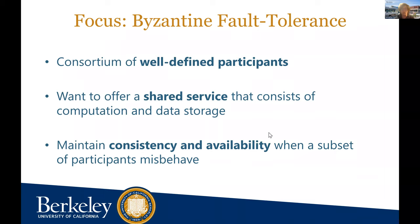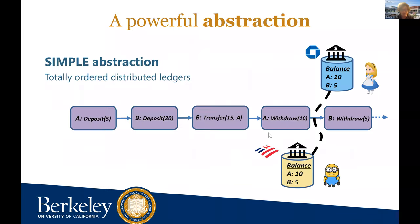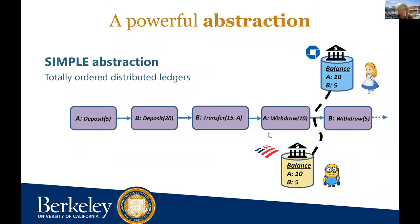We're looking at scenarios with a well-defined set of participants — from five to a few hundreds — who each want to offer a shared service where you can perform data and computation, very much like a database. These parties want to maintain consistency and availability even when a subset misbehaves. Whether you like it or not, you've probably heard about blockchain — this is exactly the abstraction permissioned blockchains and Byzantine fault-tolerant consensus protocols want to offer. BFT consensus protocols are what I'm going to focus on today.